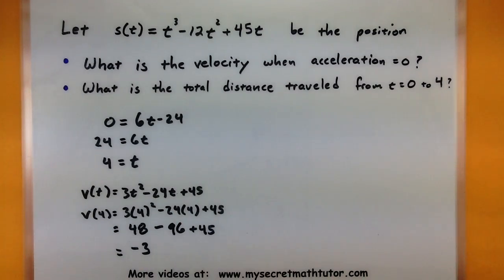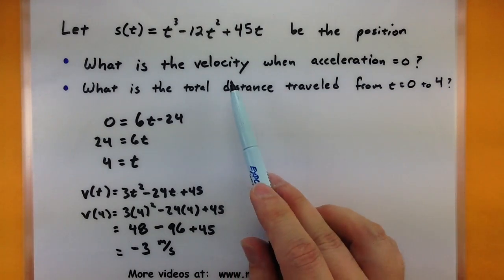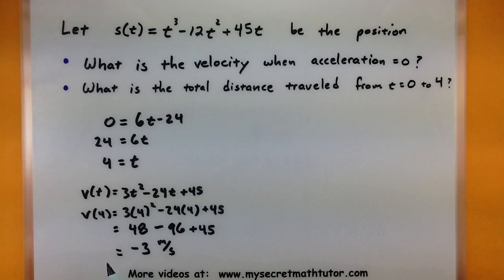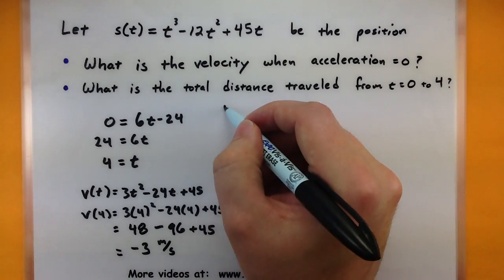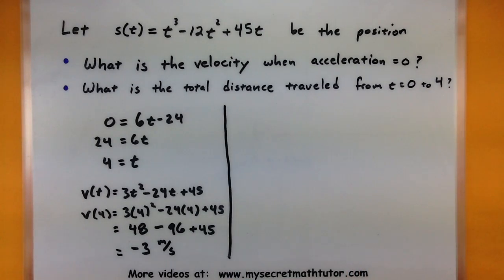And this number here is our velocity. Let's label it in meters per second. So what is the velocity when acceleration equals zero? Negative 3 meters per second. Kind of tricky, had to pick that one apart. Let's do one last one.